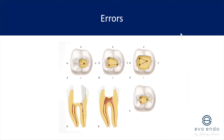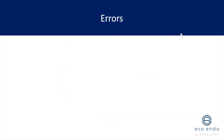Other errors: incorrect access cavity locations — not obeying where the line boundaries are; missing canals; being unnecessarily destructive of tooth structure. Also, materials being dislodged into the root canal space causing blockages. Another very common error is where people think they're at the floor of the pulp chamber whereas really they're only at the roof — which means you've left all that necrotic material in between.